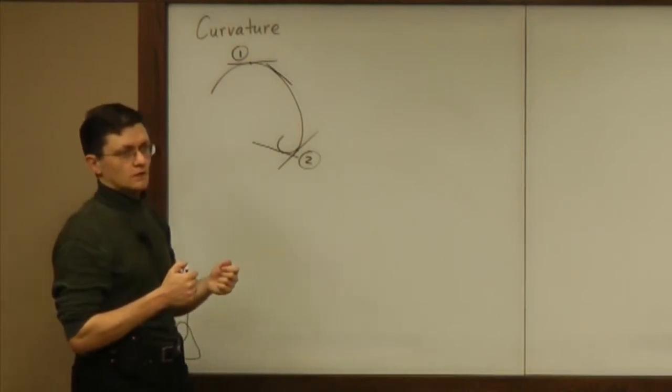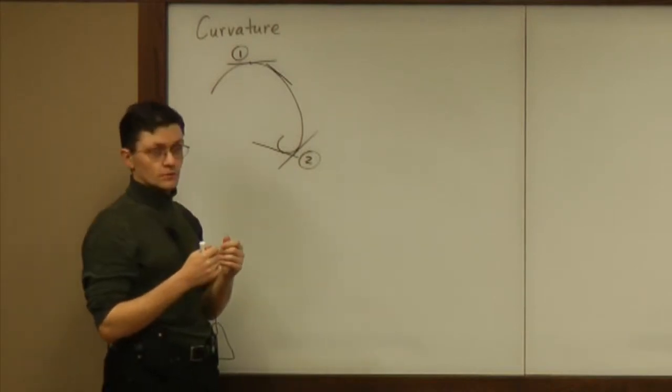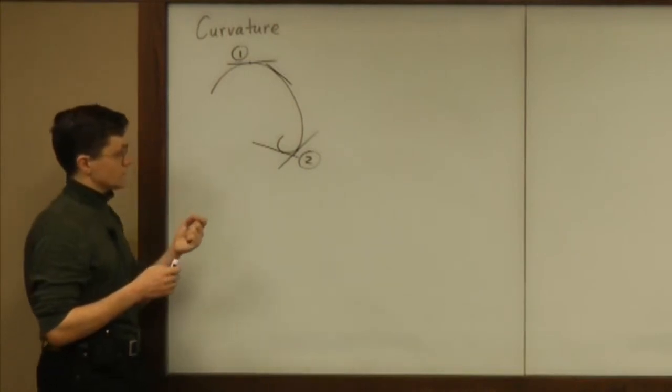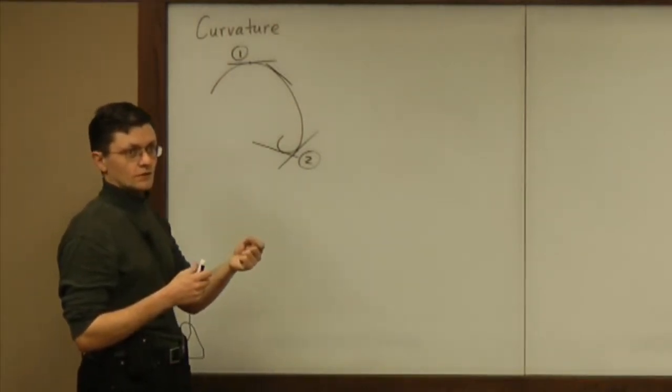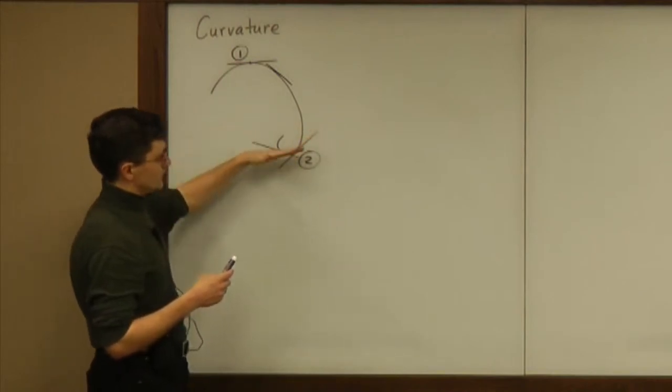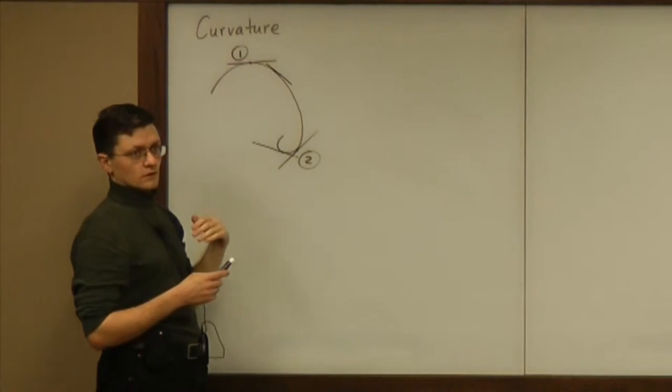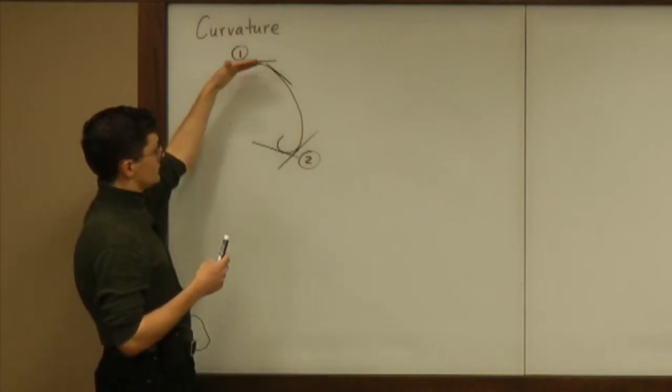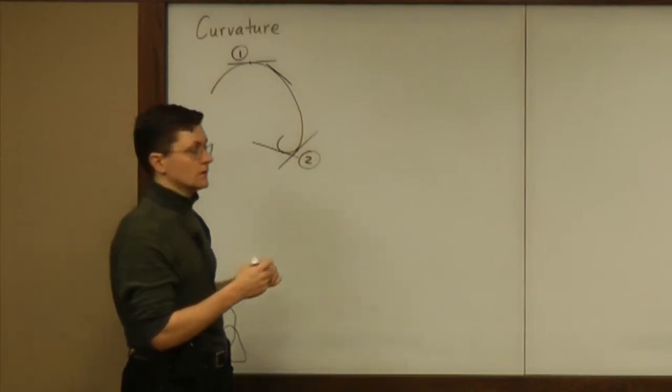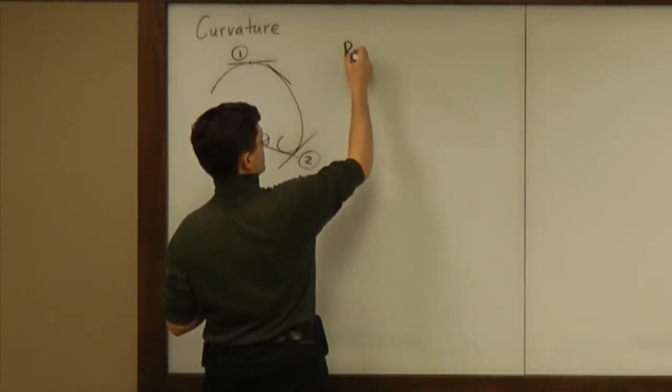What does that mean? How can we translate that into rigorous language of mathematics? Well, it seems to have something to do with the rate of change. It means that tangent line changes faster here than there. So, we are looking at the rate of change of the tangent line with respect to some parameter. So, basically we are looking at the rate of change of tangent line.